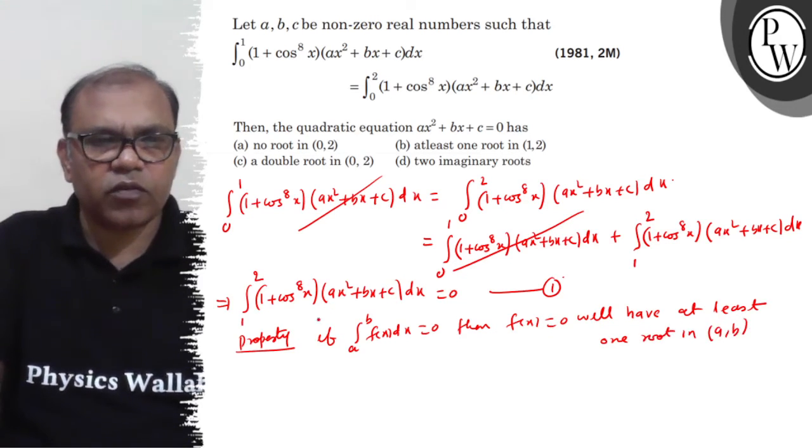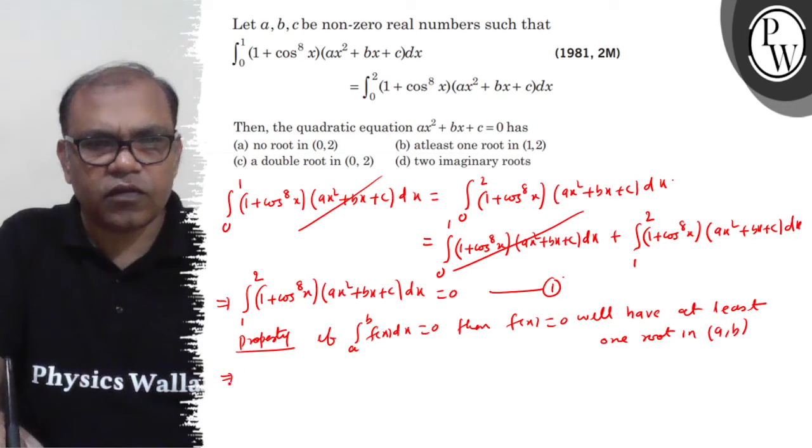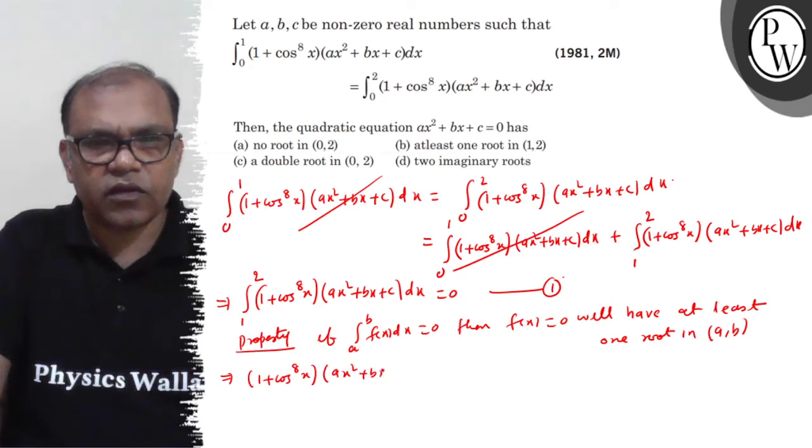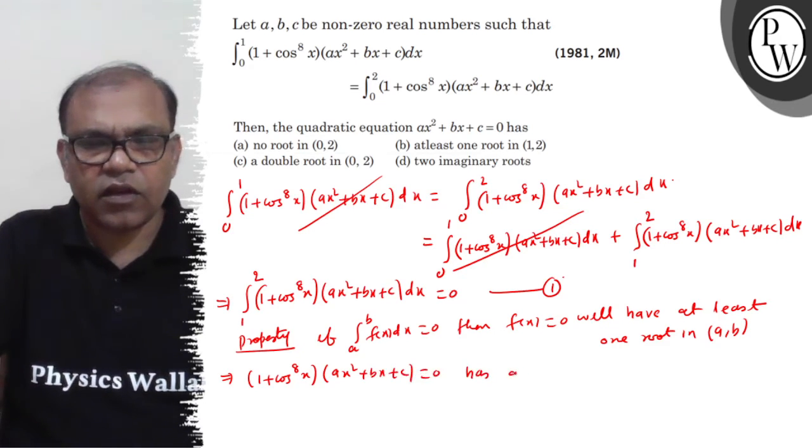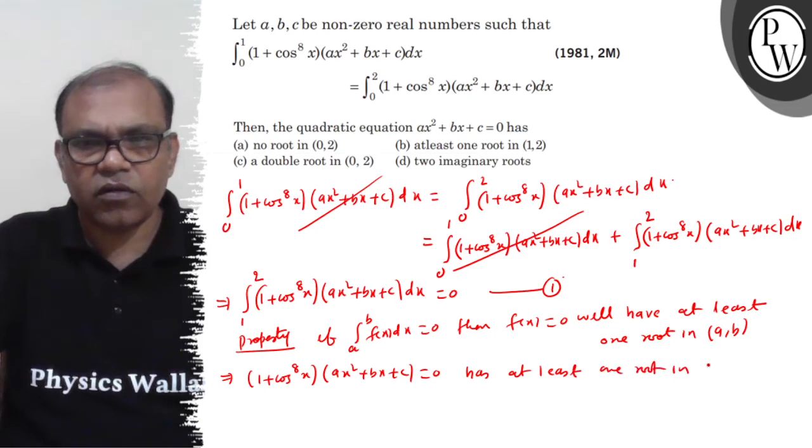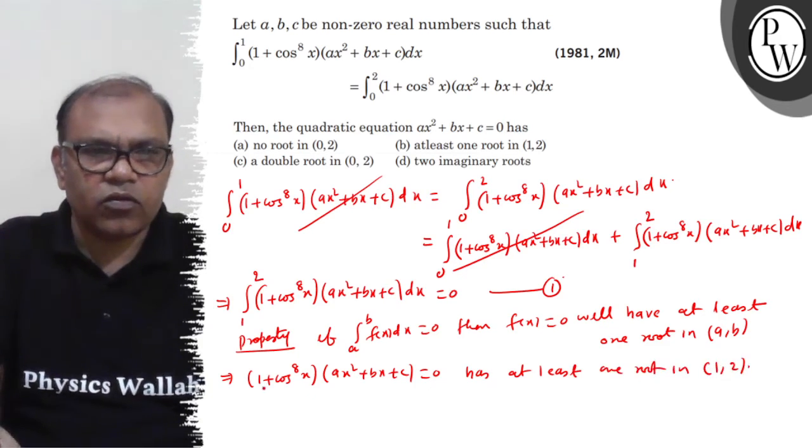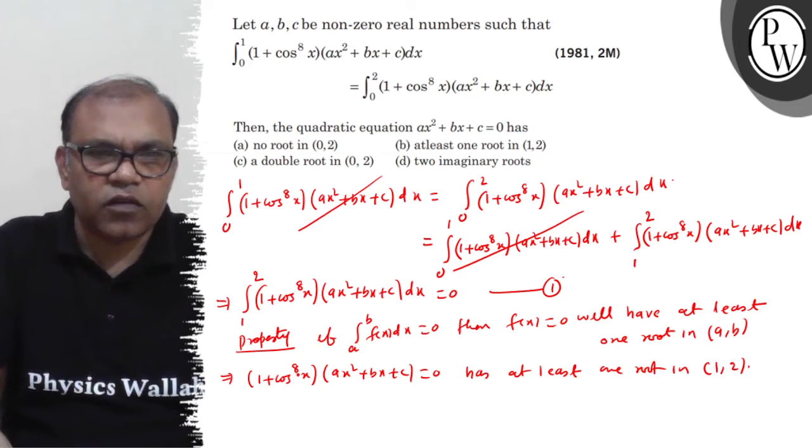Now when you use this property here, this implies (1 + cos⁸x)(ax² + bx + c) = 0. Now look, 1 + cos⁸x, this cannot have any root.